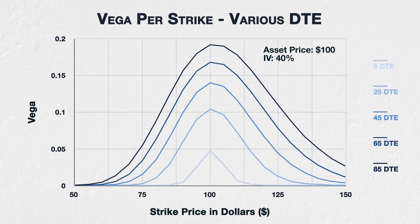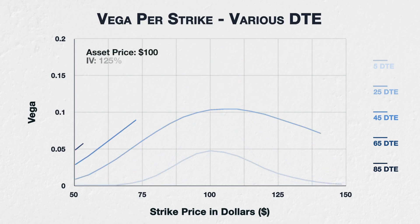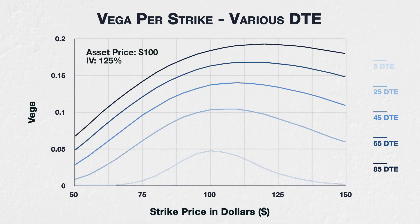This behaviour holds even if we significantly increase implied volatility. Here we have the same chart, but instead of 40% implied volatility, I've increased it to 125% implied volatility. For the higher days to expiry, we can see the behaviour discussed in the previous lecture, where the peak drifts higher in price. However, it still holds that for every strike, the more time that is left until expiry, the higher the vega.